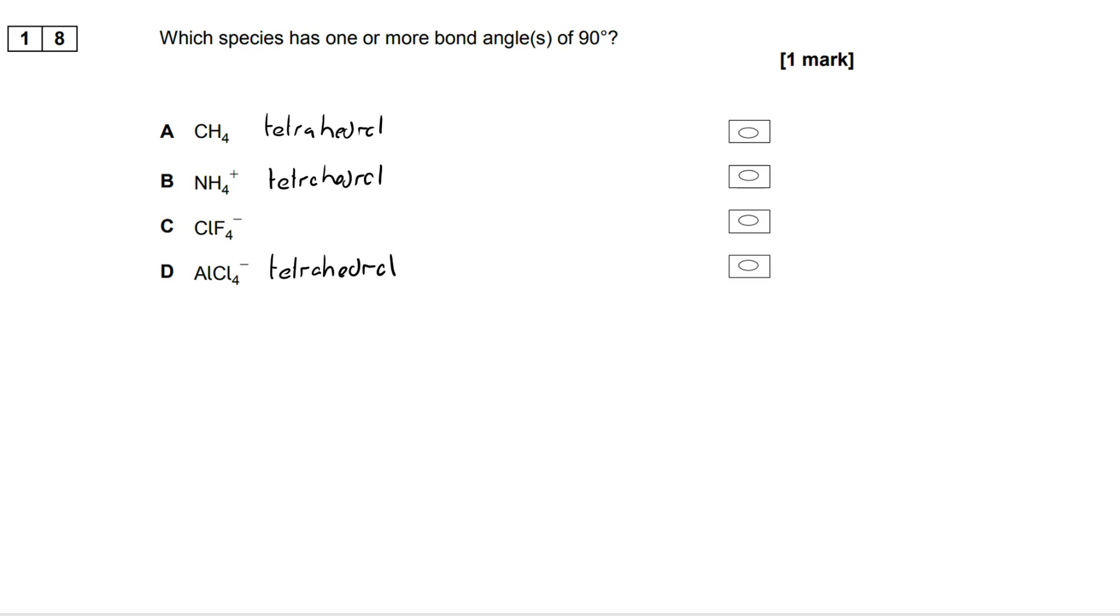CH4 for example is tetrahedral. It's methane, 109.5 degrees, but so is NH4 plus which you'll be familiar with from your introduction to dative covalent or coordinate bonding.